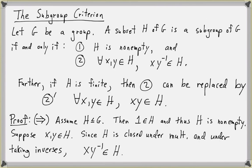To summarize: to show that a subset H of G is a subgroup of G, we need to show H is non-empty, and that for any elements x and y in H, x times y inverse is in H. But if H is finite, we just need to show that x times y is in H.